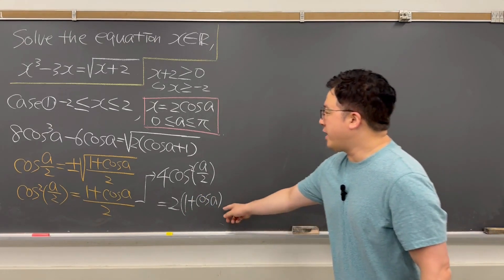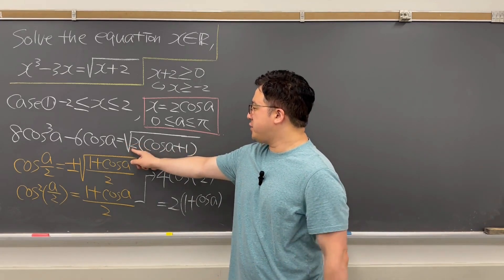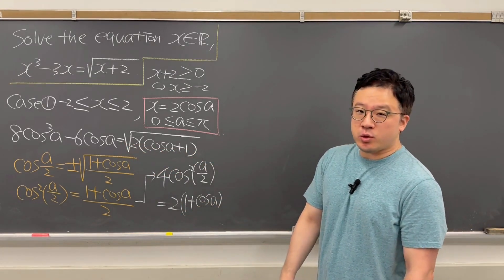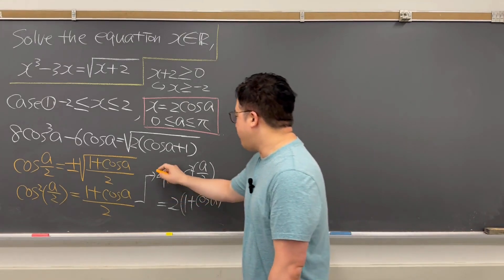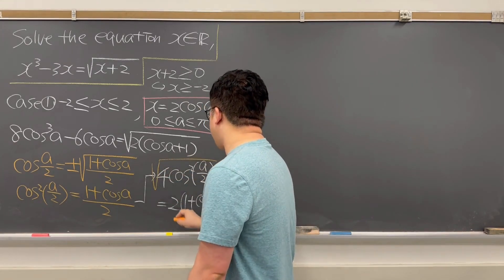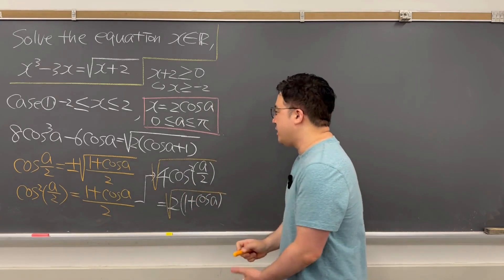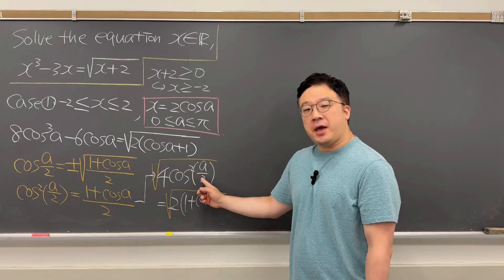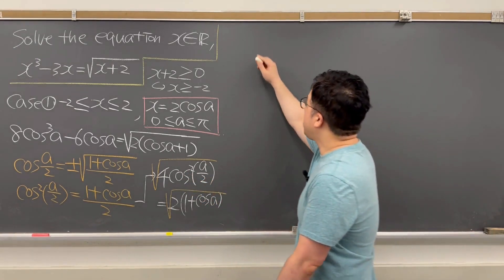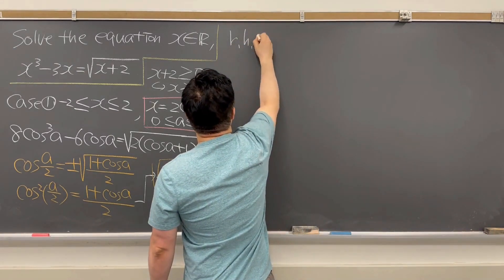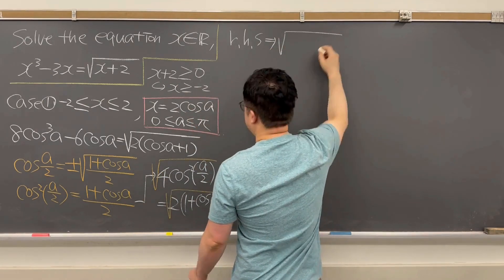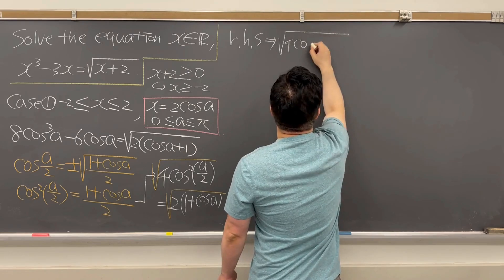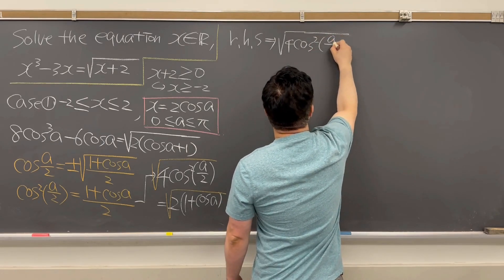Looking at the right-hand side, we have the square root of 2 times (cosine A plus 1). So if we take the square root of both sides of our identity, the right-hand side becomes the square root of 4 times cosine squared of A over 2.